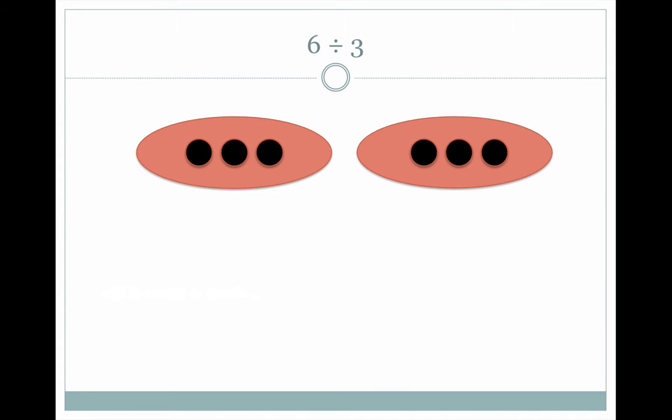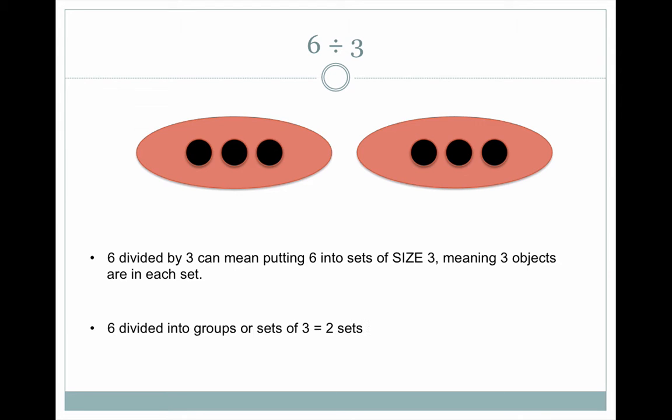Six divided by three. Six divided by three can mean putting six into sets of size three, meaning three objects are in each set. Six divided into groups or sets of three equals two sets altogether.